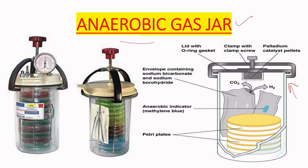Here, suppose this is a petri plate where we want to grow the anaerobic microorganisms. The anaerobic bacteria are inoculated onto the petri plate, and then we pour this petri plate into the anaerobic gas jar.